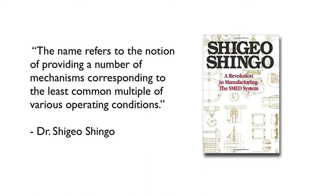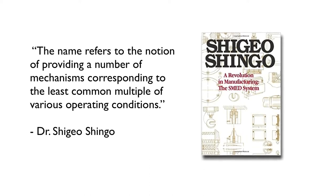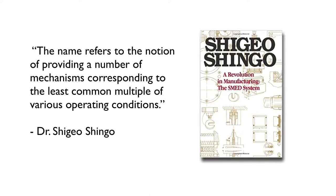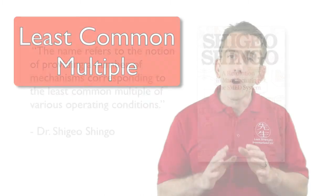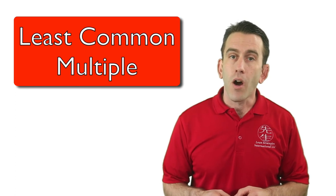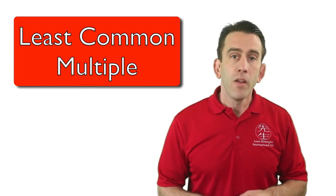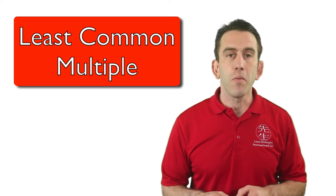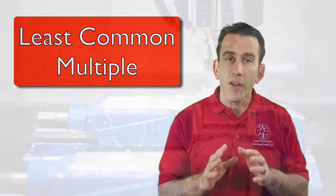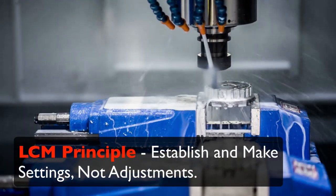providing a number of mechanisms corresponding to the least common multiple of various operating conditions. There are many examples of the least common multiple system. Success with its application depends on two fundamental principles: establish and make settings, not adjustments; modify the functions only, leave the mechanisms alone.